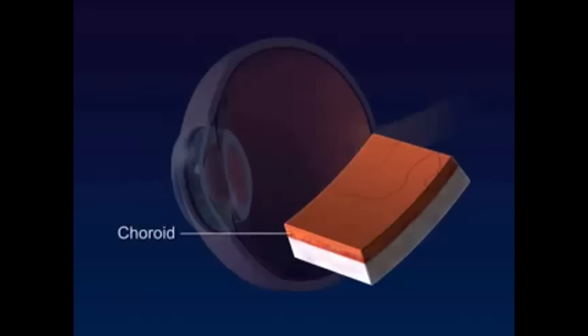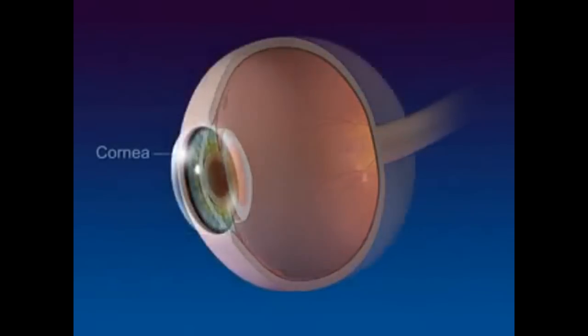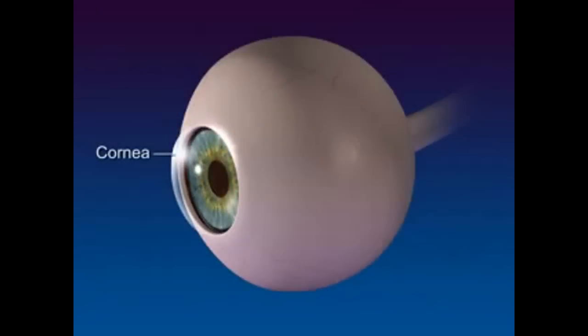Choroid is the middle layer that contains the blood vessels. The cornea is a clear circular area in the sclera where light enters the eye.